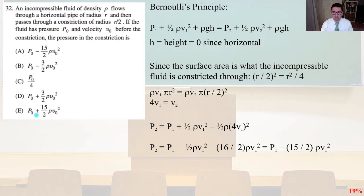So since the surface area is what the incompressible fluid is constricted through, R divided by 2 that quantity squared equals R squared over 4. So rho V1 pi R squared equals rho V2 pi quantity R over 2 squared. So 4V1 equals V2. So P2 equals P1 plus 1-half rho V1 squared minus 1-half rho quantity 4V1, that quantity 4V1 squared. So P2 minus 1-half rho V1 squared minus 16 over 2, do some algebra, rho V1 squared equals P1 minus 15 over 2 rho V1 squared.